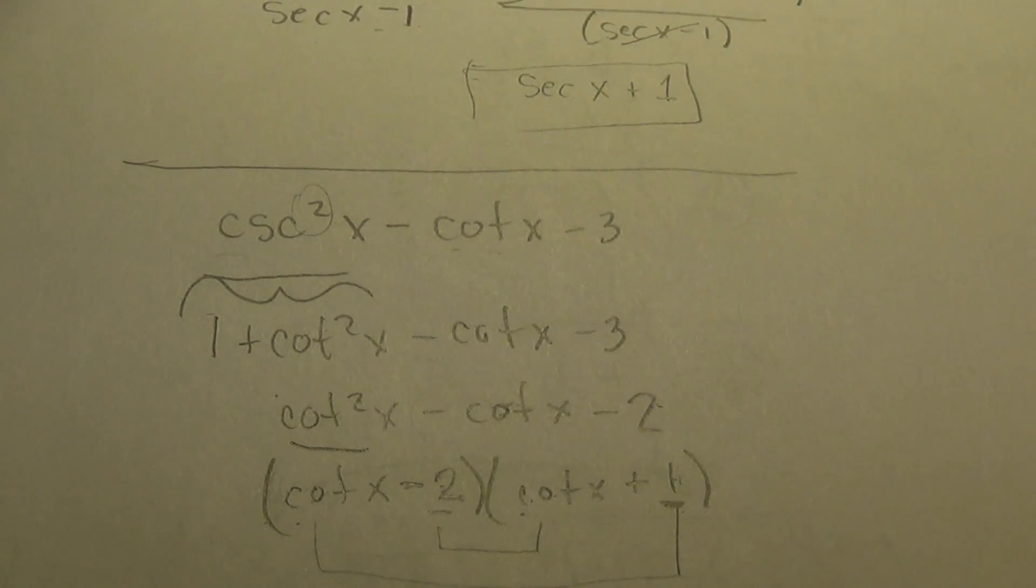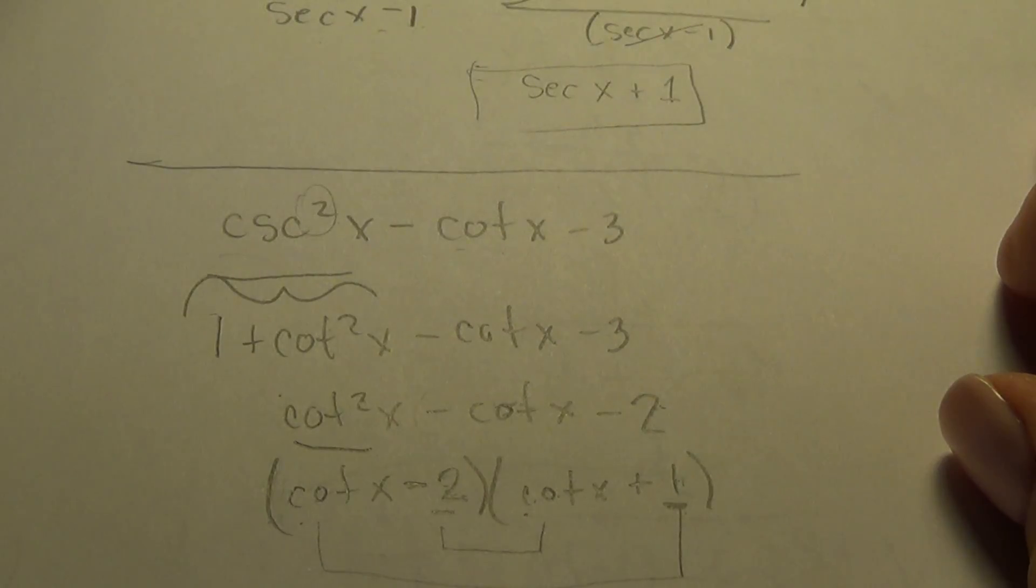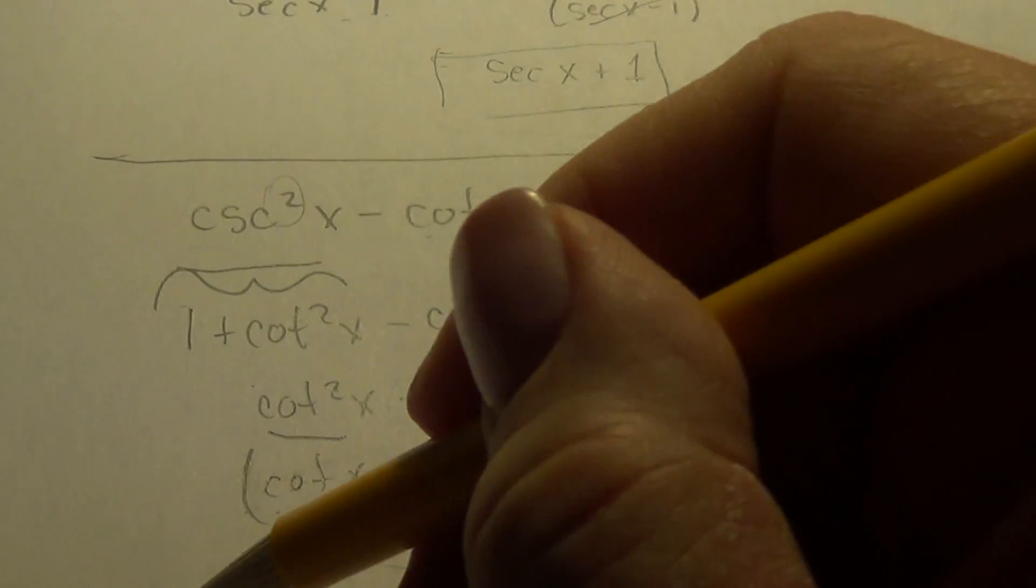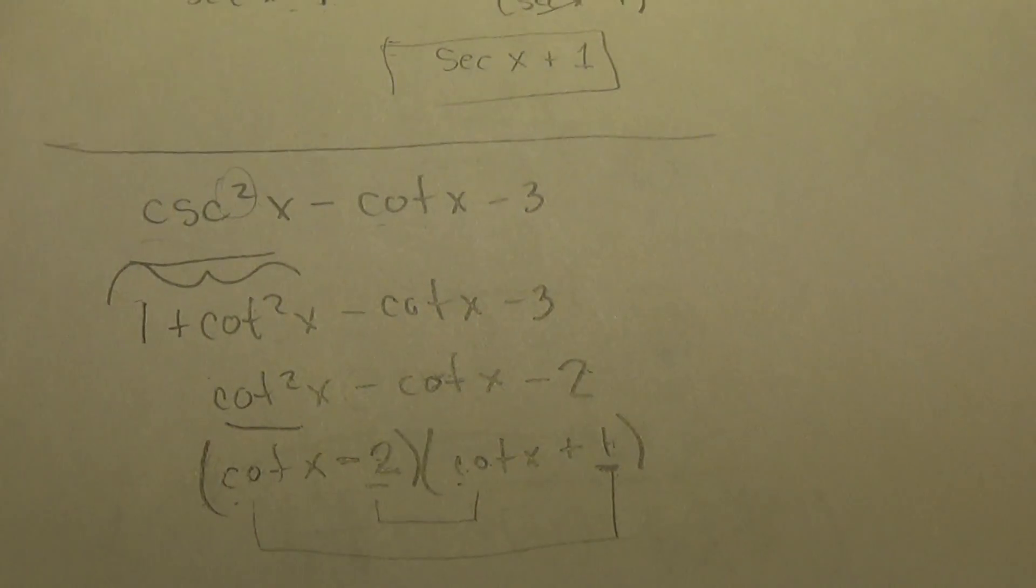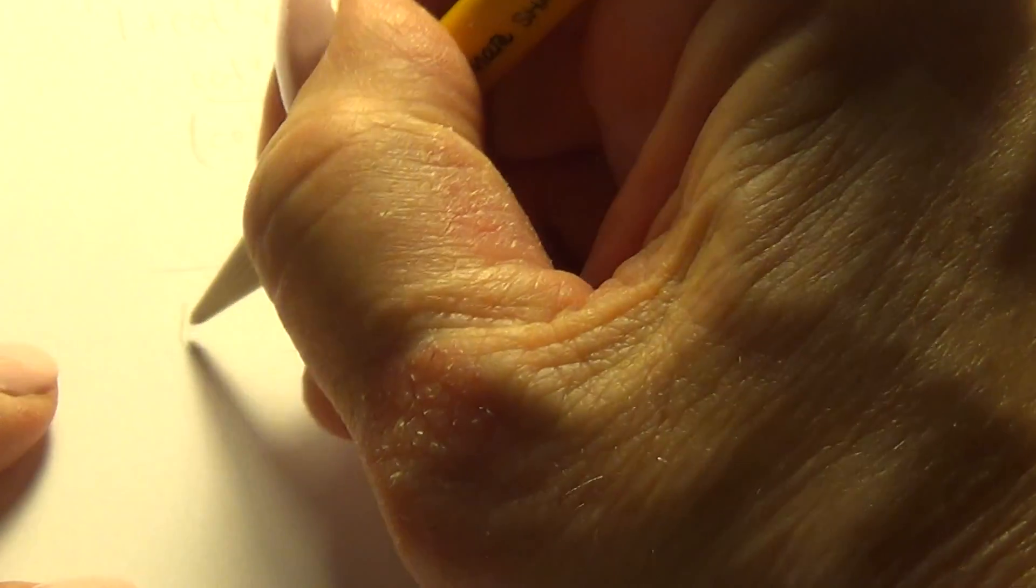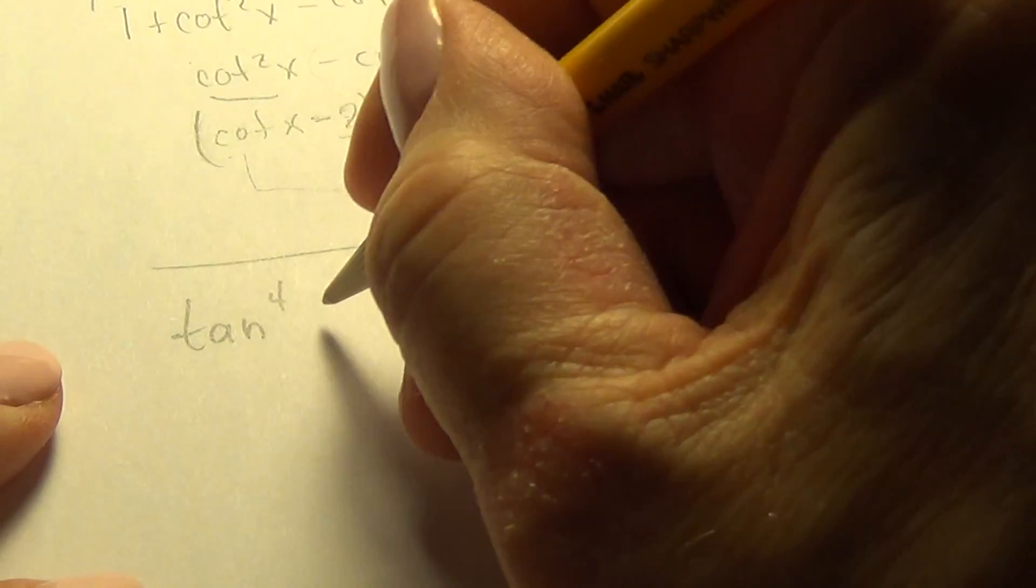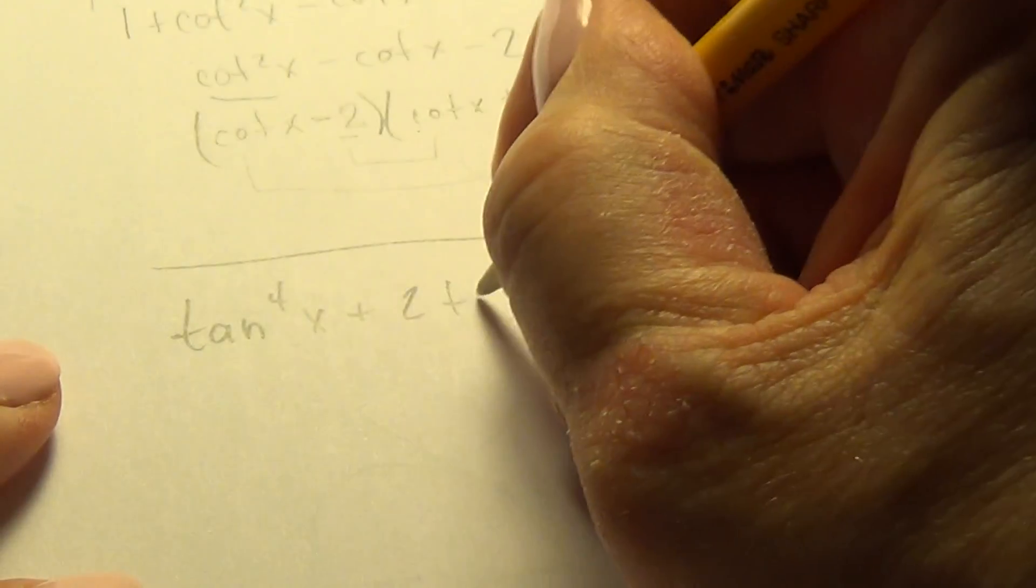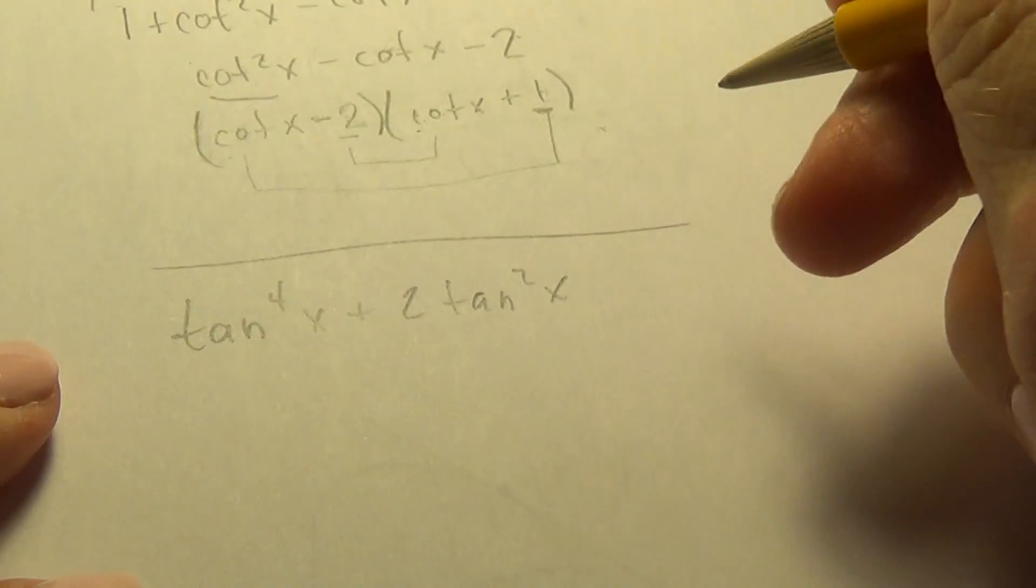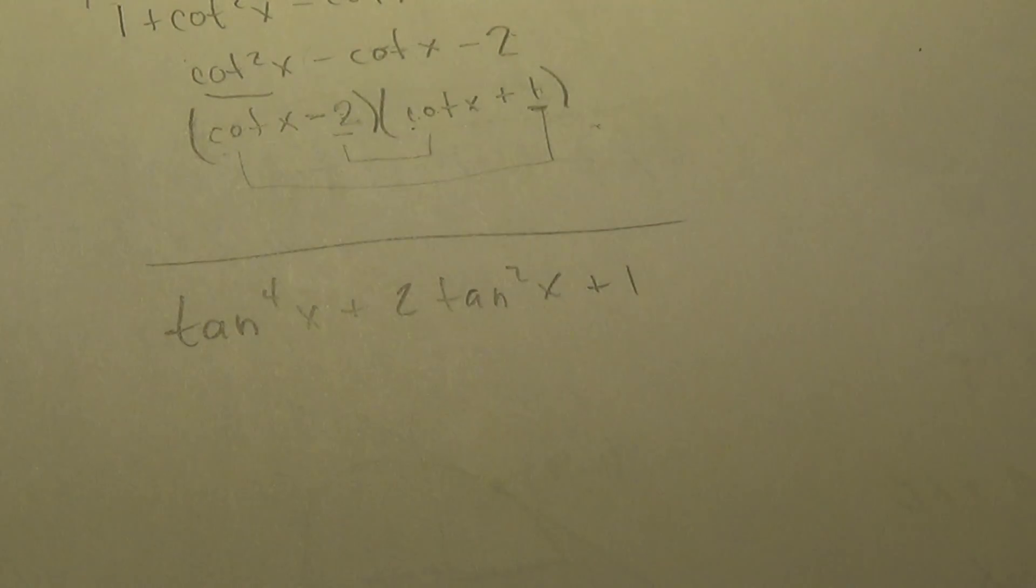So in order to use that in the middle of an expression, let's try this one. I'm not sure if this is a good one because I haven't worked it out previously. But to my eye, it looks like it would. So this one is tangent to the fourth, x plus two tangent squared, x plus one.